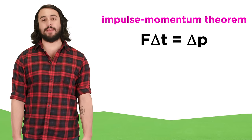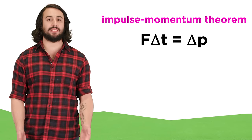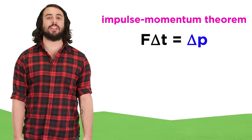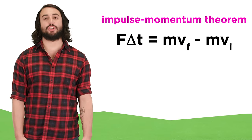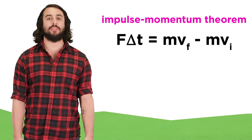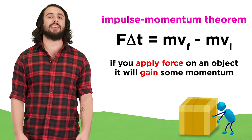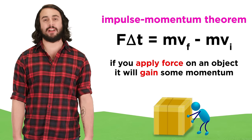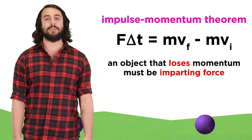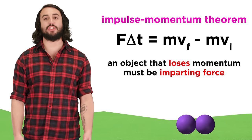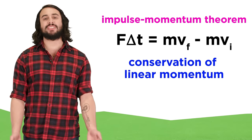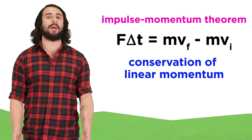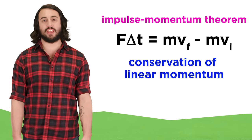The relationship between impulse and momentum is summarized in the impulse-momentum theorem. It states that the impulse, F delta T, is equal to the change in momentum, or delta P, which can also be expressed as MV final minus MV initial. So if you apply some force to push an object for some duration of time, that object will gain a proportional amount of momentum. If an object loses momentum, it must be imparting some force to something else over some time period. Just as the work-energy theorem describes conservation of mechanical energy, the impulse-momentum theorem describes conservation of linear momentum.